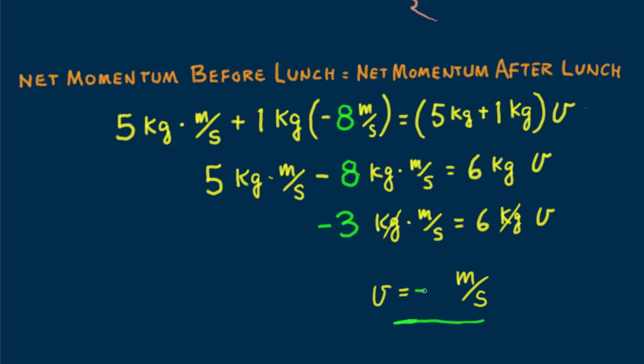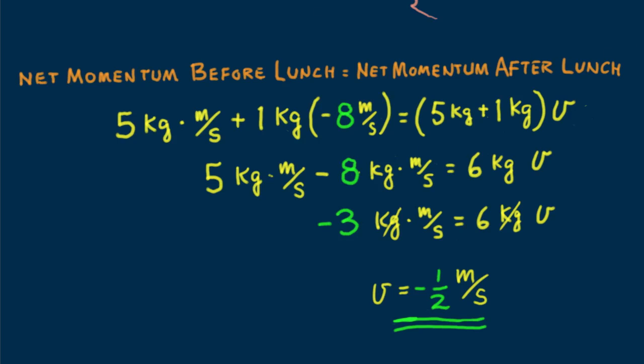Here we see the final velocity is minus 1/2 meter per second. What's the significance of the minus sign? After lunch, the two fish system moves backward toward the left. Yum yum physics, at least according to the large fish.